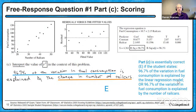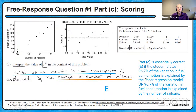A few other numbers on the computer output: S is the standard deviation of the residuals, representing the size of a typical prediction error when using this model to predict fuel consumption — about 4.361 units of fuel. In a previous session we looked at the standard error of the slope, which is 0.1396, used when calculating a confidence interval for the slope of a regression line.